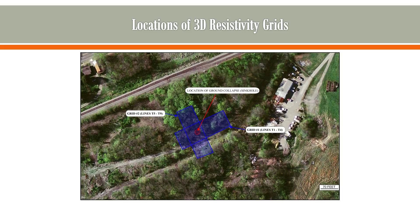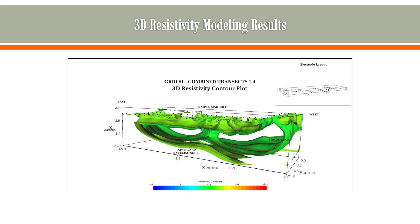The 2D lines were combined into two three-dimensional models to further examine this collapse zone — or ravel zone — of sandy soils. These results clearly show the location of the collapse feature, with sandy soils directly underneath and adjacent to it, extending down to the limestone unit.